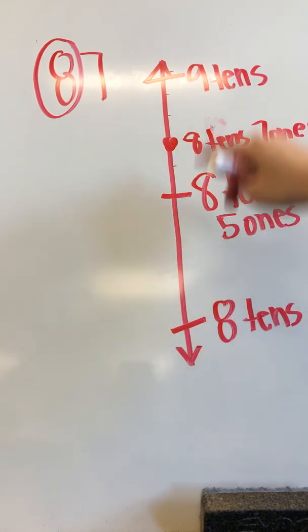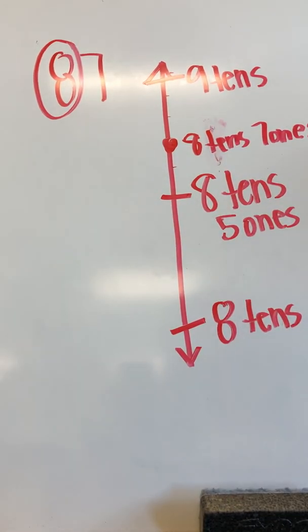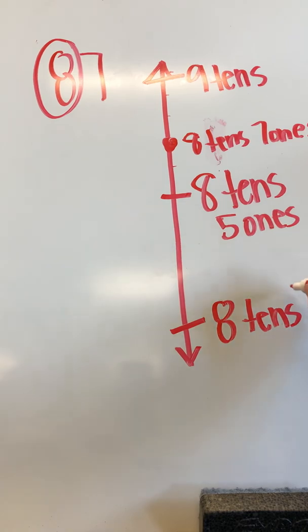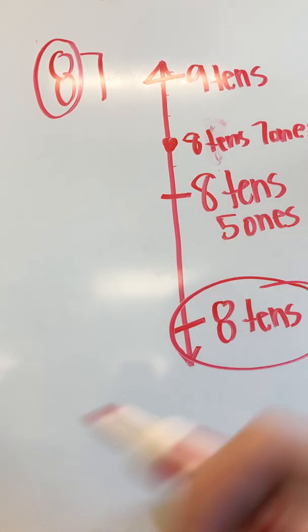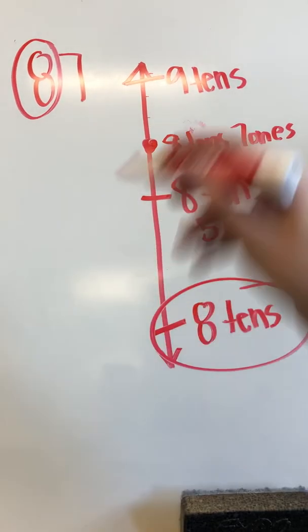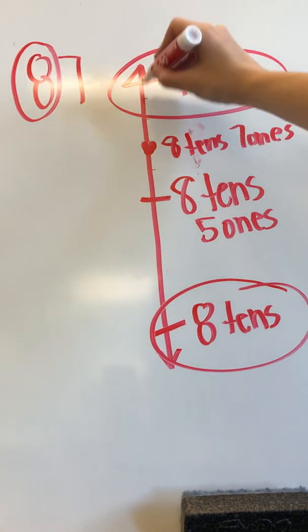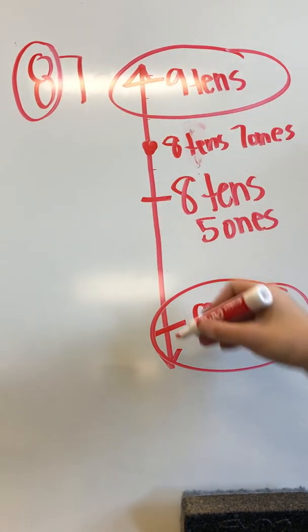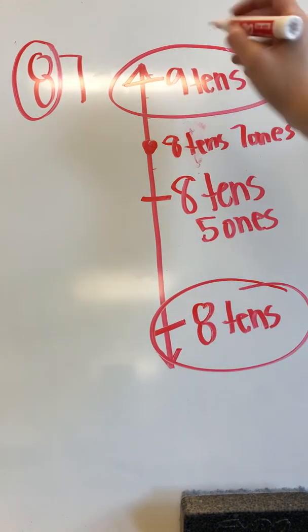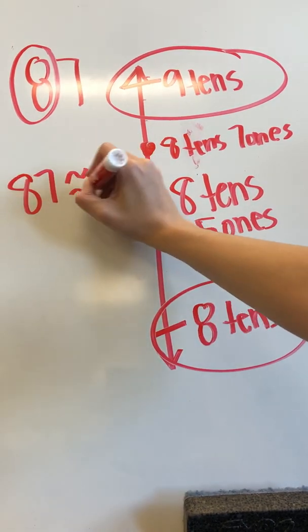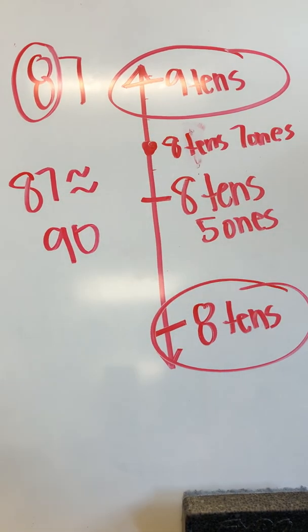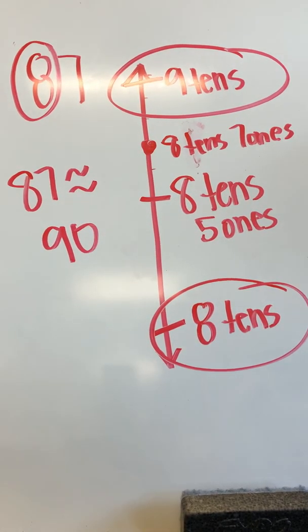Now we can see what 8 tens, 7 ones is closer to. Is it closer to our 8 tens? Or is it closer to our 9 tens? Well, it's only 3 spaces away from 9 tens, but it's 7 spaces away from 8 tens. So it's closer to 9 tens. 87 rounds to 90 when you round to the nearest 10. Alright.